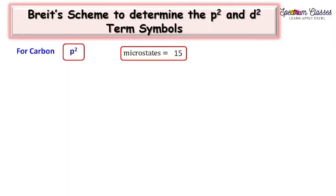Hello everyone, welcome back to Spectrum Classes. This is another video on the topic of term symbols. In this video, I am going to discuss how to write the P2 and D2 term symbols without writing their microstates. For P2 configuration, 15 microstates are possible, and for D2 configuration, 45 microstates are possible. This is an alternative scheme known as the BRITS scheme.